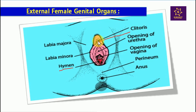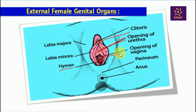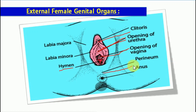This is the clitoris — a female erogenous organ capable of reaction under sexual stimulation. Then comes the opening of the urethra, followed by the opening of the vagina just above the hymen. This is the perineum — the region between the opening of the vagina and the anus in the female.